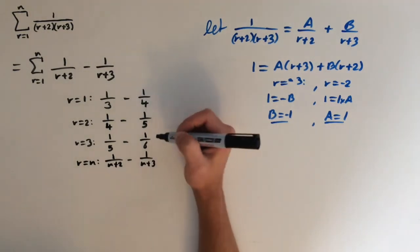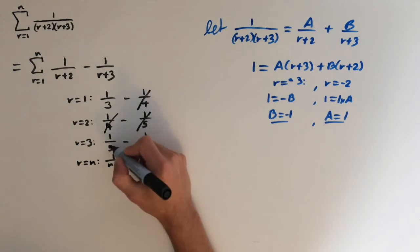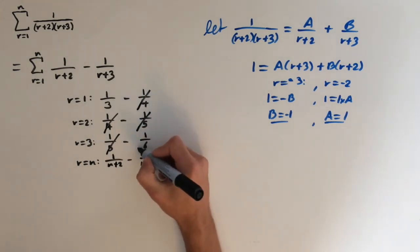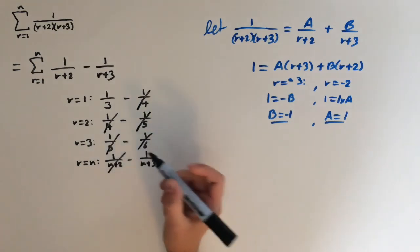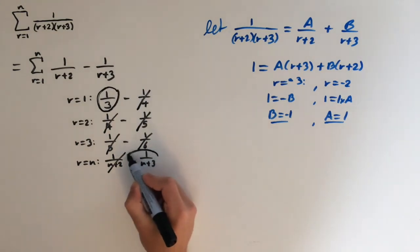So you can see that some of these terms are going to cancel out. So the quarters cancel out. The fifths cancel out. And this pattern is going to go on for the whole series. So all the middle terms are going to cancel out like this. So we're left with a third here at the start and the minus 1 over n plus 3 right at the end.